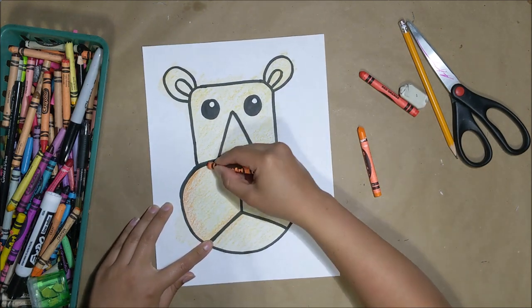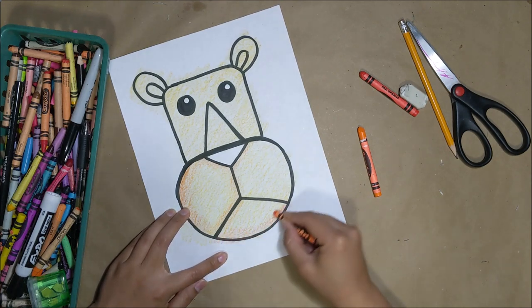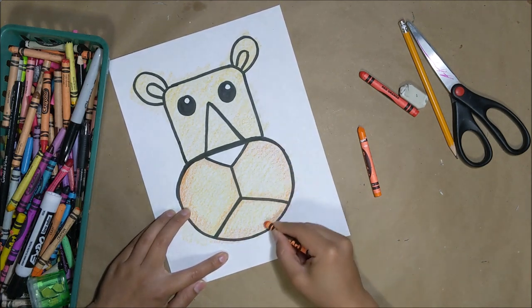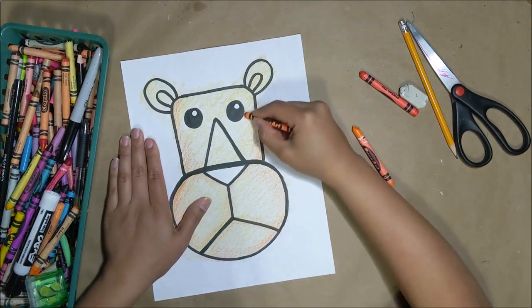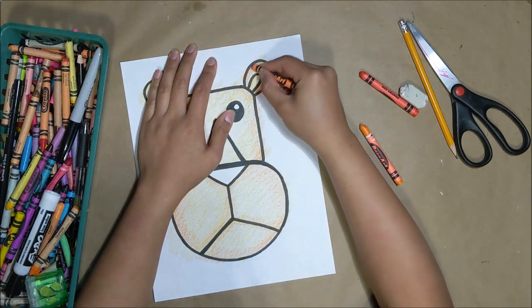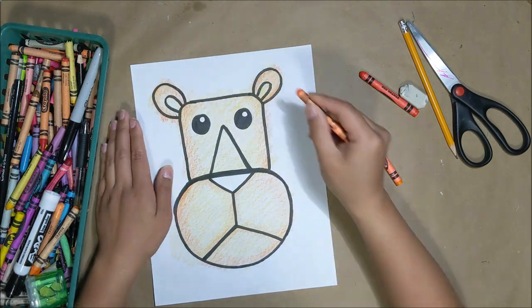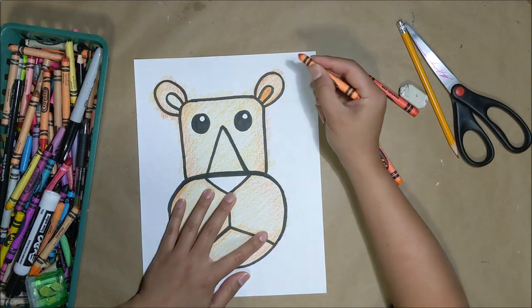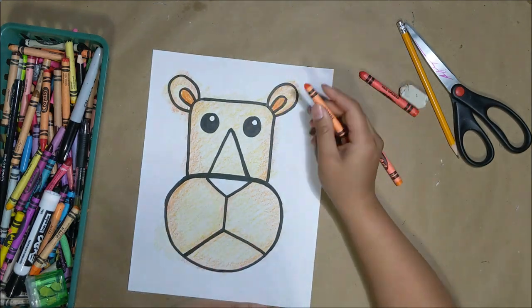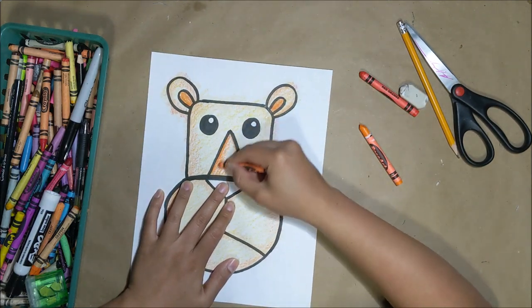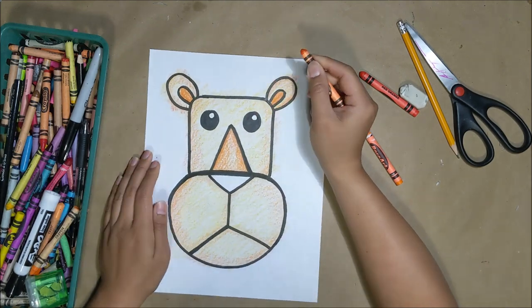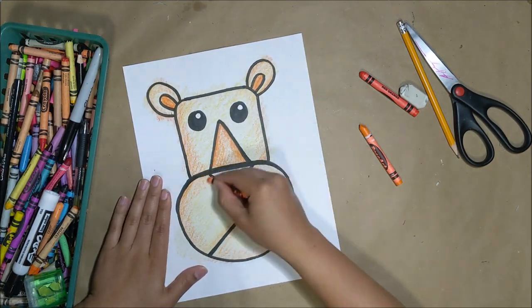Now I'm taking my regular orange and I'm going to create some shadows. I'm going to press down a little bit harder and go around the edges of the lion's face. Going inside the ears I'm going to darken that up with my orange and then also the larger triangle. Press down so you can get more of that color.